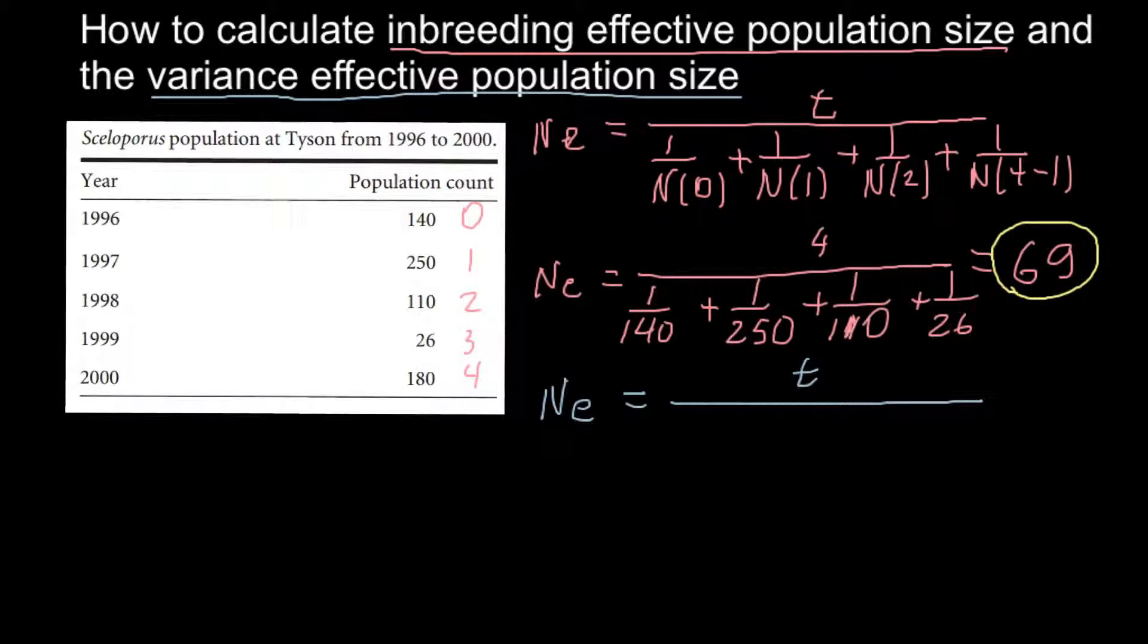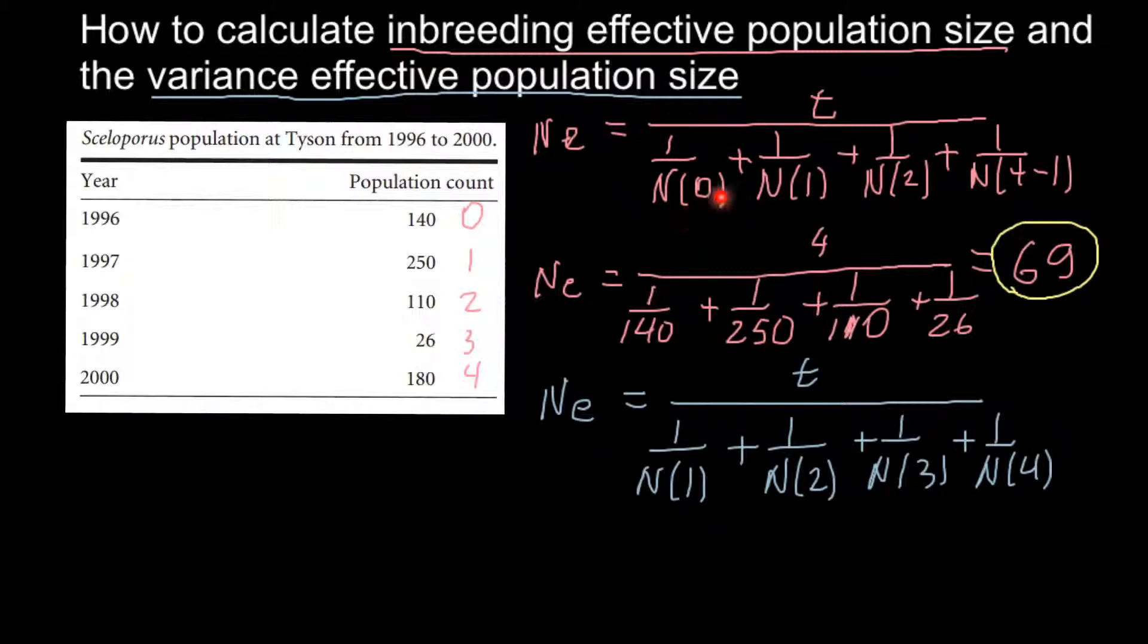1 divided by number in generation 1, plus 1 divided by number in generation 2, plus 1 divided by number in generation 3, plus 1 divided by number in generation 4. So as you see, the difference between the first formula and the second formula would be that here we start with the founding generation.